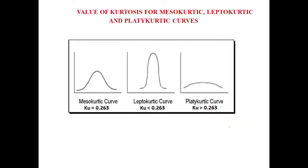Value of kurtosis for mesocurtic, leptocurtic, and platycurtic curves. In the case of a mesocurtic curve, it is neither too flattened nor too peaked — it is a normal curve, and the value of kurtosis is 0.263. Whereas in the case of a leptocurtic curve, it is too peaked as compared to the normal curve, and the value of kurtosis is less than 0.263.